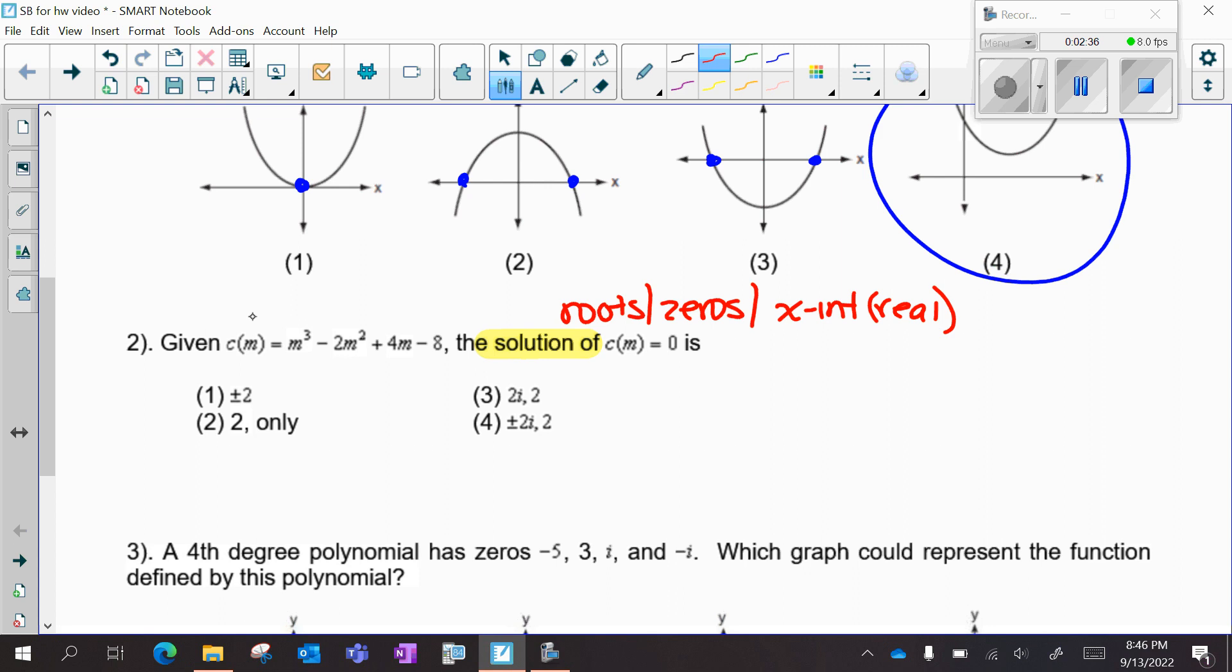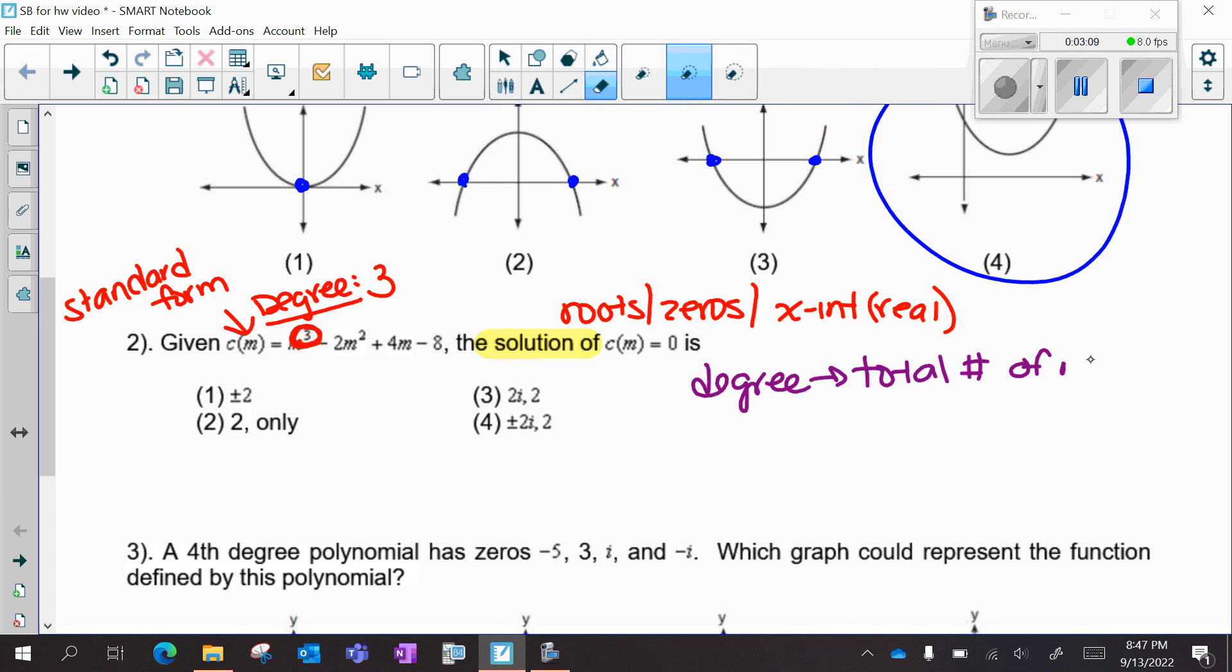So this function here is in standard form, because it's listed out, there are no parentheses. When it's in standard form, I find the degree by taking the largest exponent. So my degree here is 3. And remember that the degree tells you the total number of roots, both real and imaginary, put together.